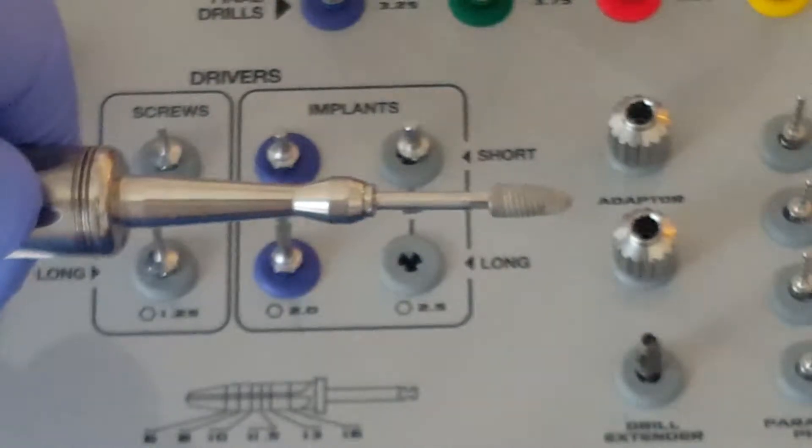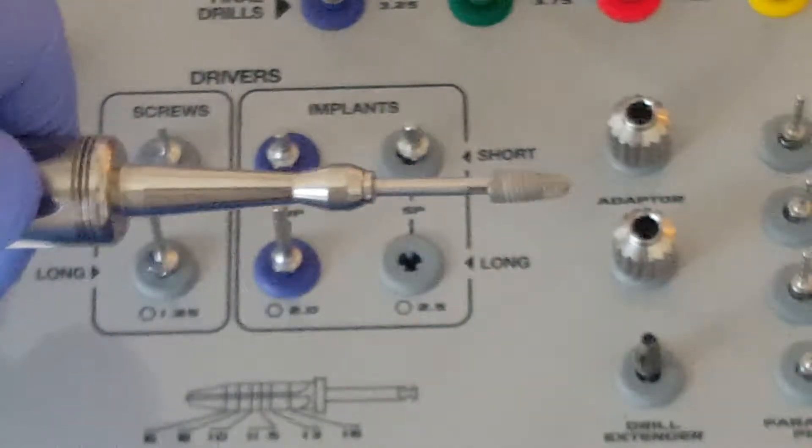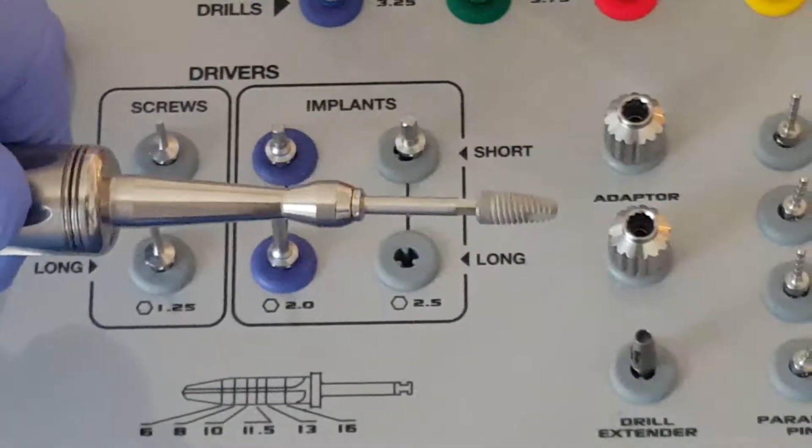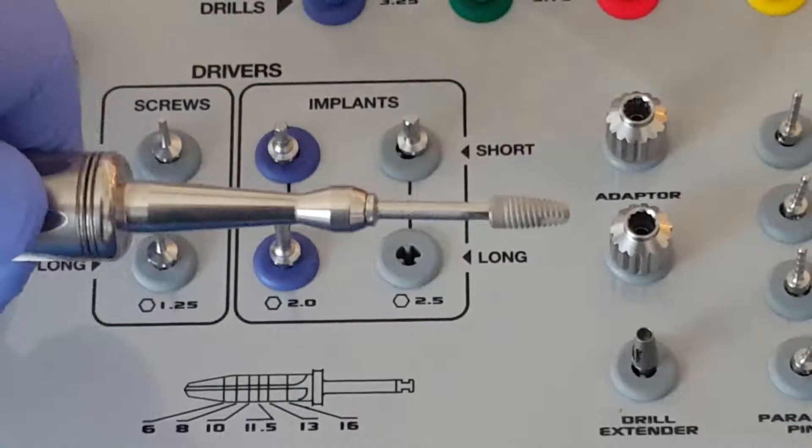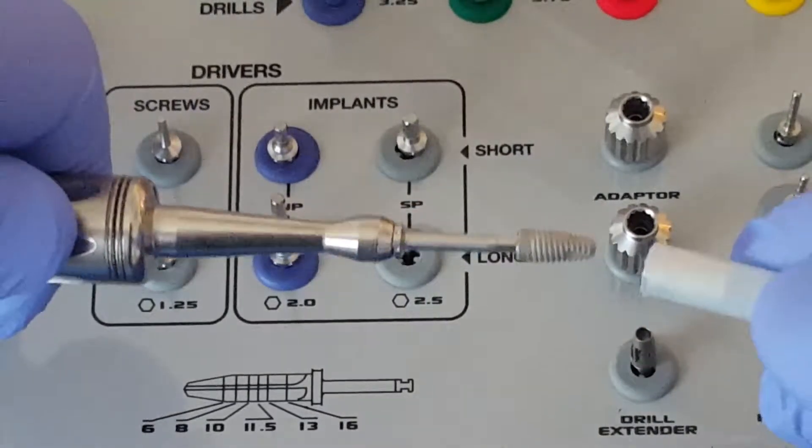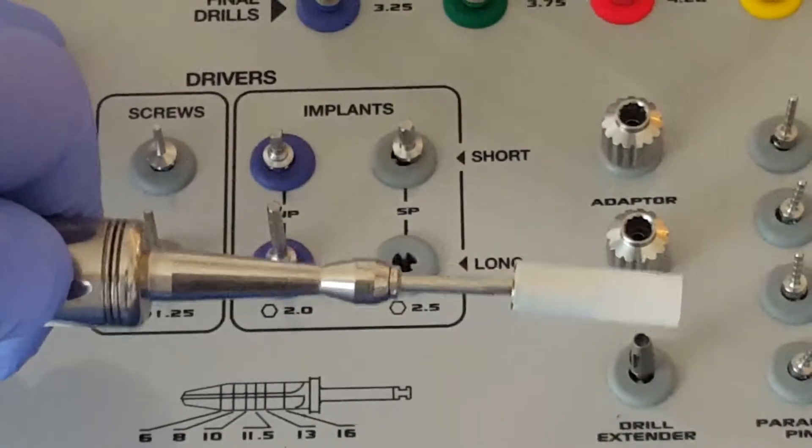If the implant was inserted or partially inserted and then required removal so there can be re-preparation of the osteotomy, then the implant can be re-inserted into its vial and completely encased in titanium without fear of contamination.